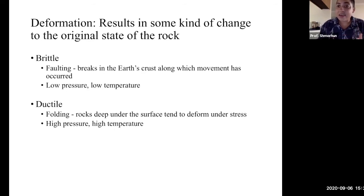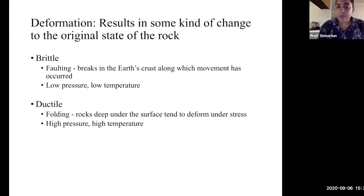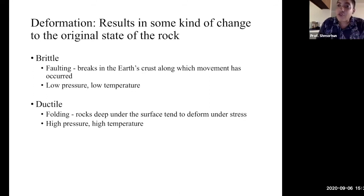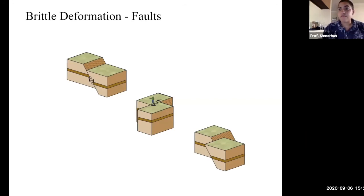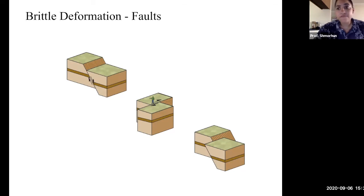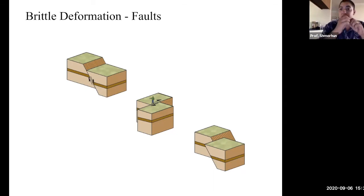Unlike a rubber band, rock is not going to pop back to its original shape — it will deform permanently, it will strain permanently. If a rock unit faults and cracks, we know it was under low pressure and low temperature, because otherwise it would have folded. So based on how it has strained, we can infer the type of stress it was placed under. Faulting occurs within the crust at lower temperatures and pressures — you apply stress until the rock reaches its elastic limit and suddenly breaks. That sudden slippage is called faulting.